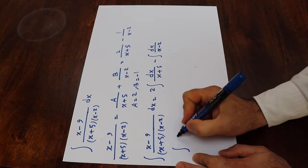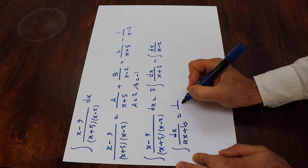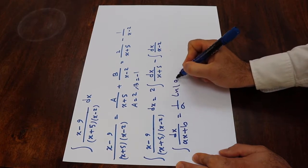From the table of integrals, you should know that the integral of dx divided by ax plus b is equal to 1 divided by a ln ax plus b.